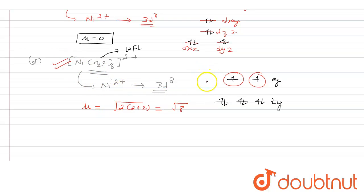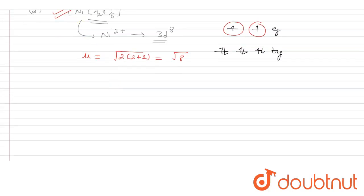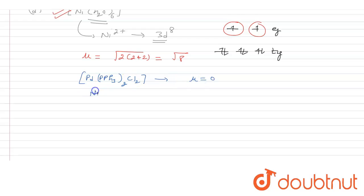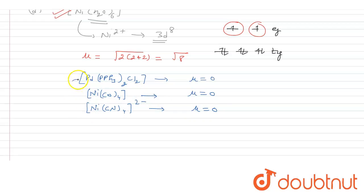Summarizing: the first three complexes — [Pd(PPh₃)₂Cl₂] (A), [Ni(CO)₄] (B), and [Ni(CN)₄]²⁻ (C) — all have μ = 0, because they are square planar or tetrahedral with all electrons paired. The fourth complex [Ni(H₂O)₆]²⁺ (D) is octahedral with μ = √8.